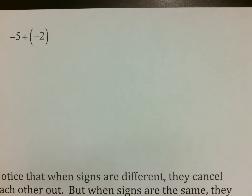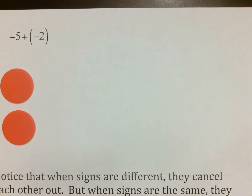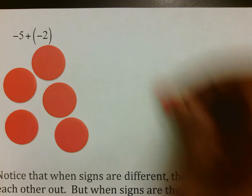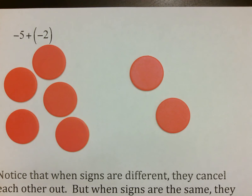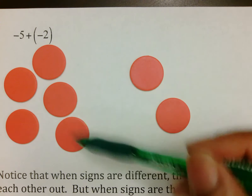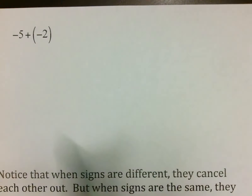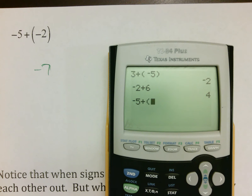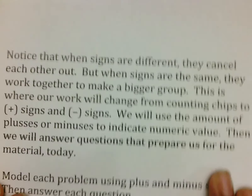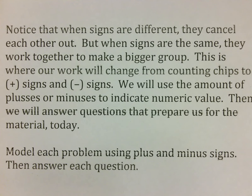One more example before we move on: negative 5 plus negative 2. That's 5 red chips — 1, 2, 3, 4, 5 — for your negative 5, and then 2 more negatives for negative 2. Notice that when I put these two things together, there is no set of opposites, which means nothing cancels. All you do now is combine them: 1, 2, 3, 4, 5, 6, 7 negatives — your answer is negative 7. When signs are different they cancel each other out, but when signs are the same they work together to make a bigger group.